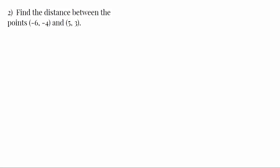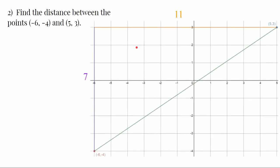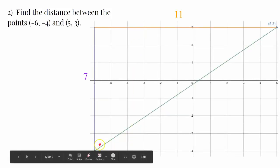If you haven't already completed this problem, pause the video and hit play when you're ready to see the answer. First, you want to graph the two points, (-6, -4) and (5, 3) in your coordinate plane, connecting them with a straight line.